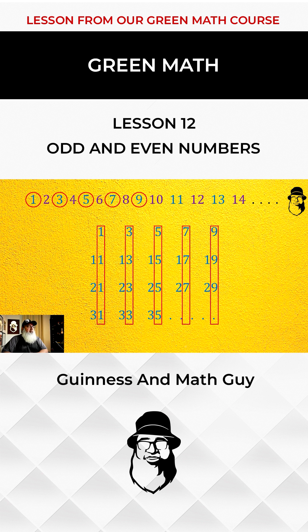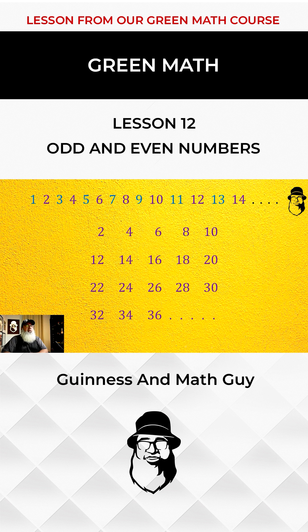Similarly, if we extend the sequence of even numbers, we get these numbers and we can see from this that all even numbers end in 2 or 4 or 6 or 8 or 0.